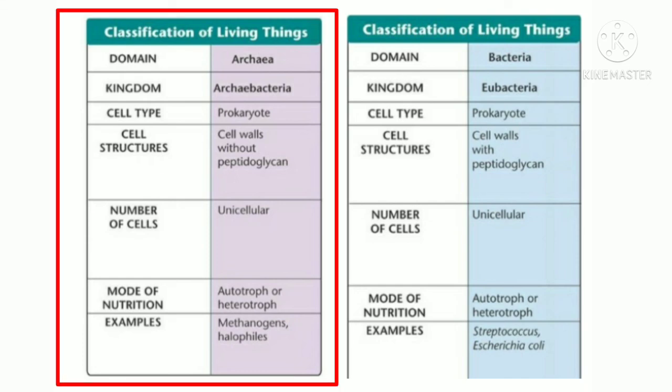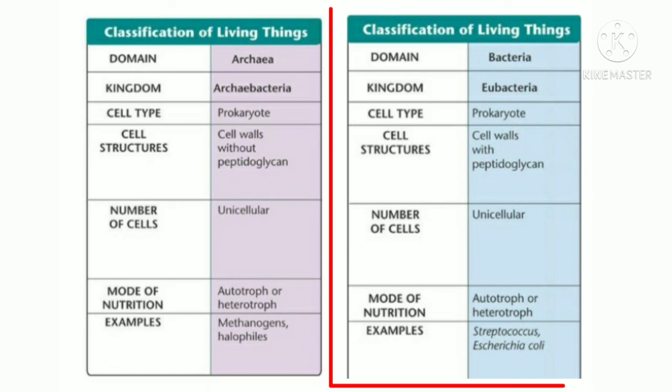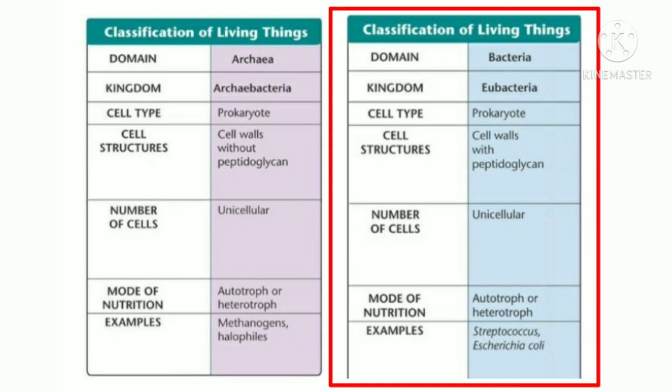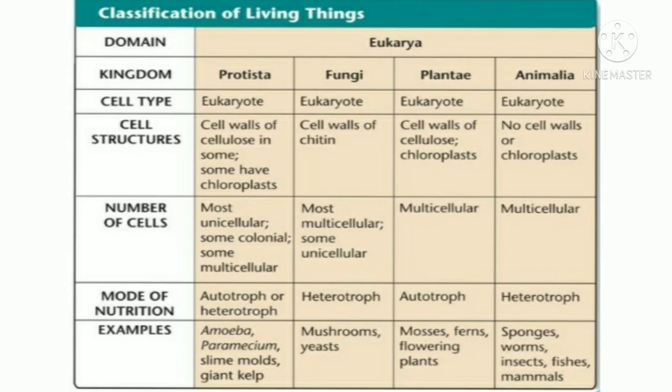In detail: the domain Archaea contains kingdom Archaebacteria — cell type is prokaryote, cell wall without peptidoglycan, unicellular, nutrition is autotrophic or heterotrophic, examples include methanogens, halophiles, and thermoacidophiles. The domain Bacteria contains kingdom Eubacteria — cell type is prokaryote, cell wall with peptidoglycan, unicellular, autotrophic or heterotrophic, examples include Streptococcus and Escherichia coli.